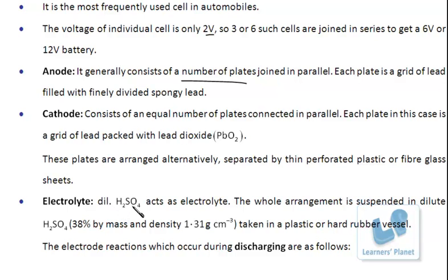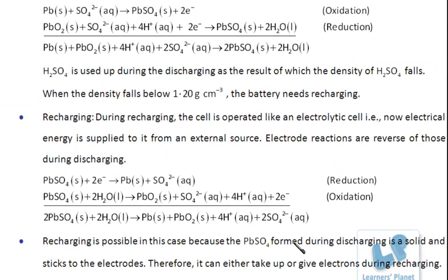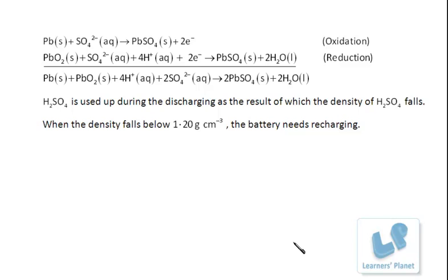The electrolyte is dilute sulfuric acid. The whole arrangement is suspended in dilute sulfuric acid which is 38% by mass with a density of 1.31 g/cm³, taken in a plastic or hard rubber vessel. Now let's look at the electrode reactions which occur during discharging.